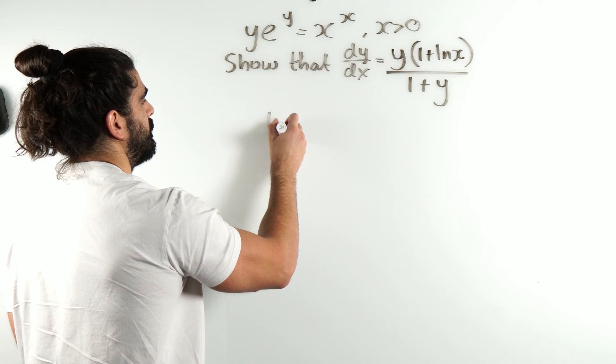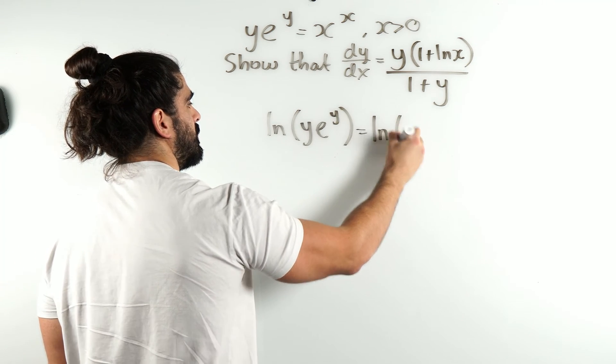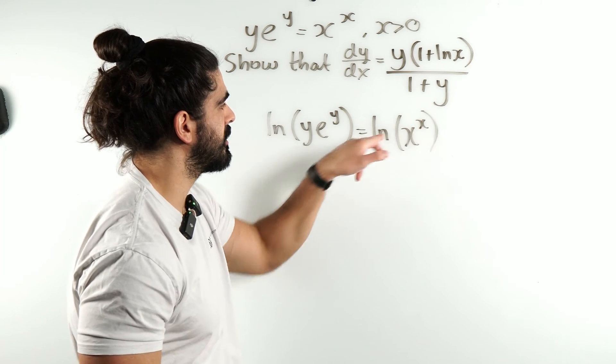So we have ln of y times e to the y equals ln of x to the x. Now, why are we doing ln? So we can bring down the power.